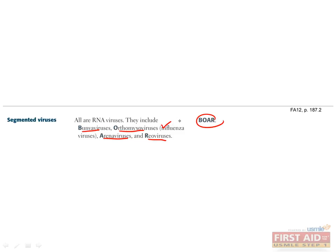It is important to remember that orthomyxovirus, or the influenza virus, has a segmented viral genome. Segmented genomes are capable of reassortment, which causes genetic shifts and new influenza pandemics. The H1N1 influenza strain of 2009 is an example of an influenza pandemic brought about by high-recombination reassortment that combined genes from human, pig, and avian flu.